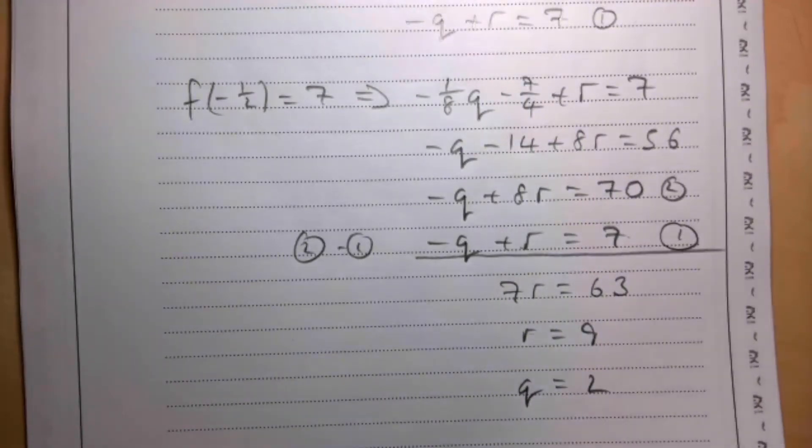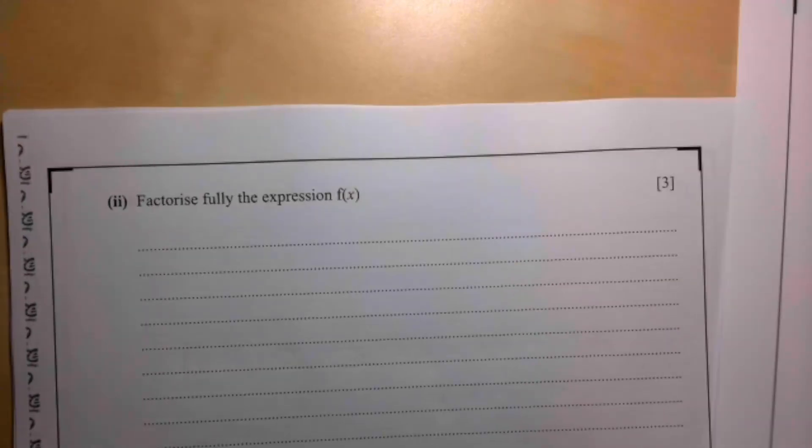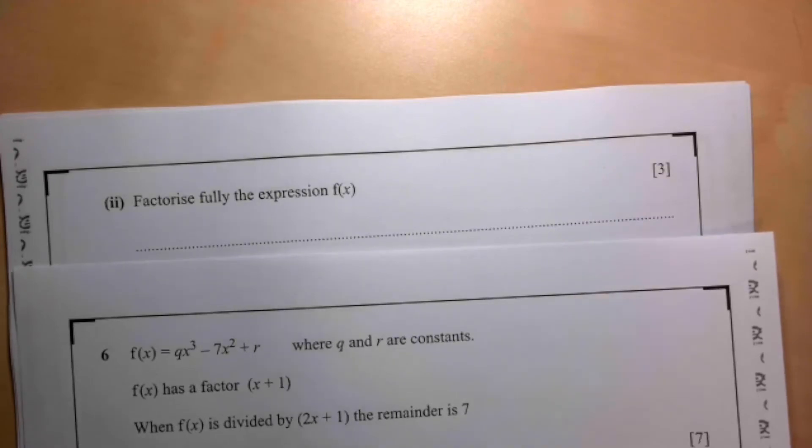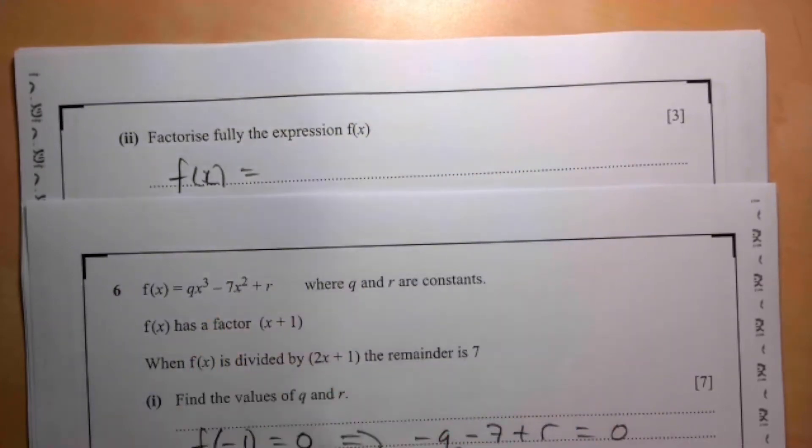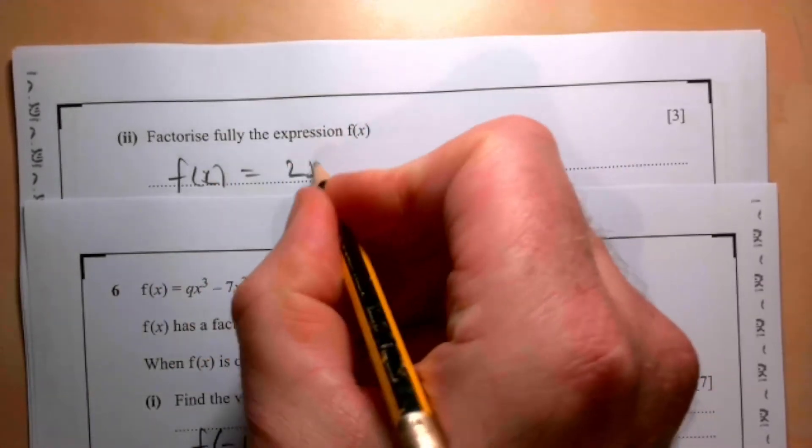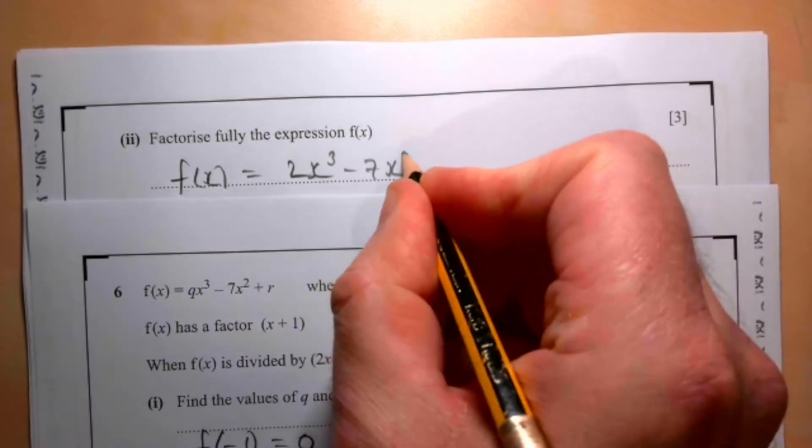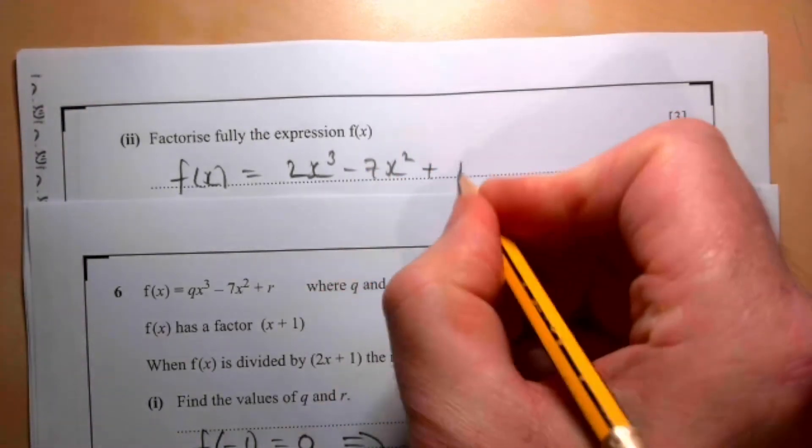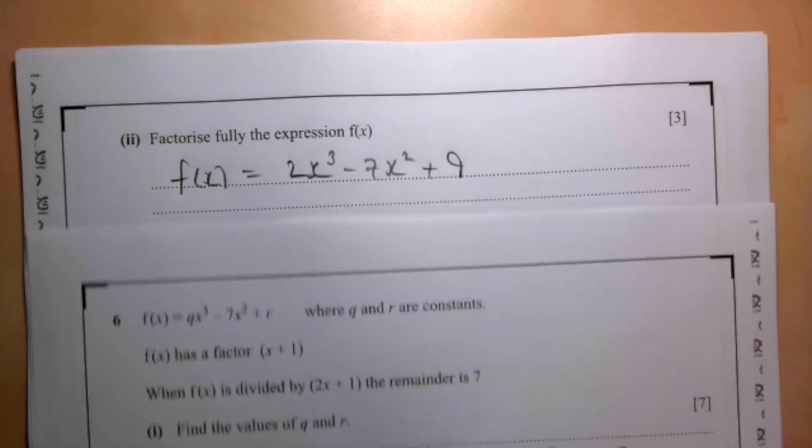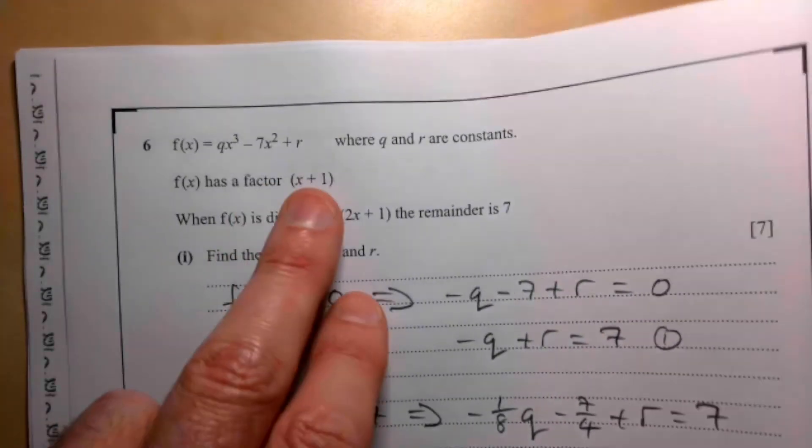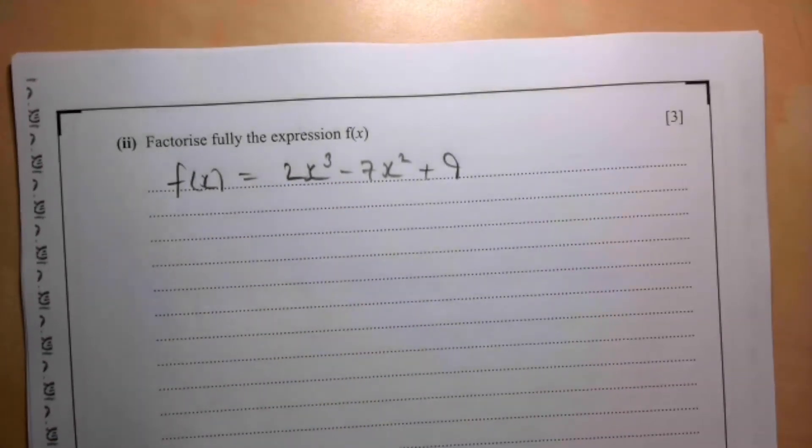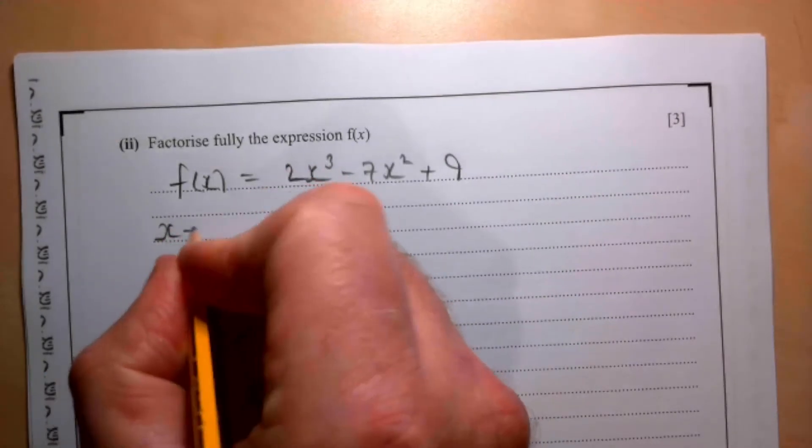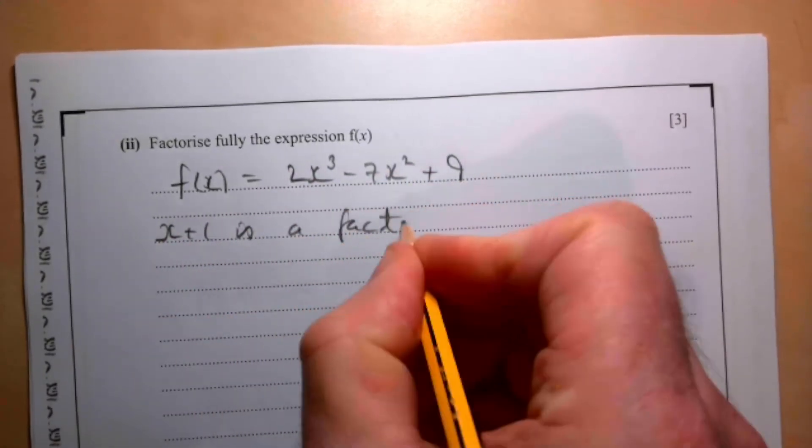So find the values of q and r. Now factorize fully the expression f(x). So my f(x), the q we've just worked out is 2, so it's 2x³ - 7x² + 9. And I now have to factorize that fully, but I know that x + 1 is a factor, so I don't need to use the factor theorem.